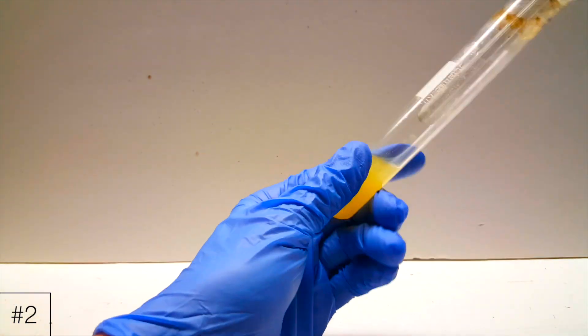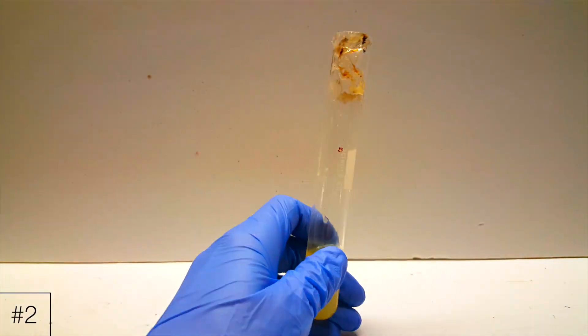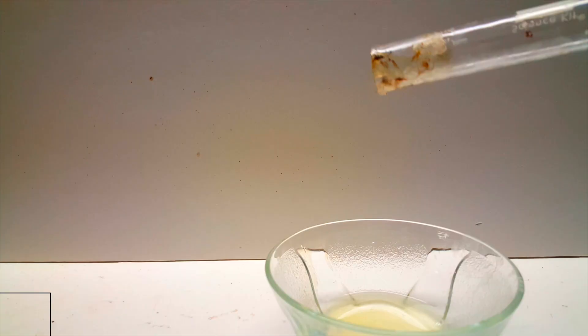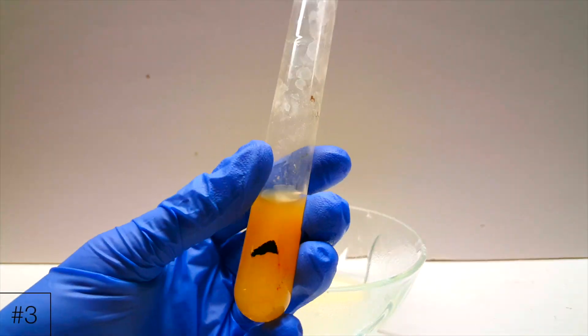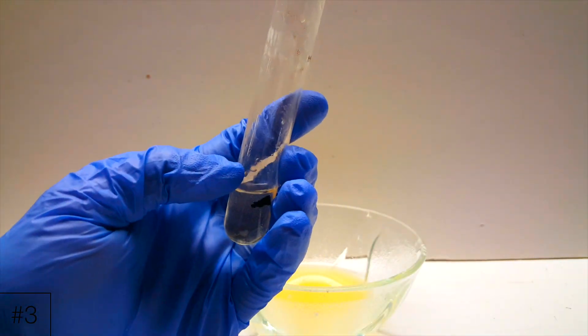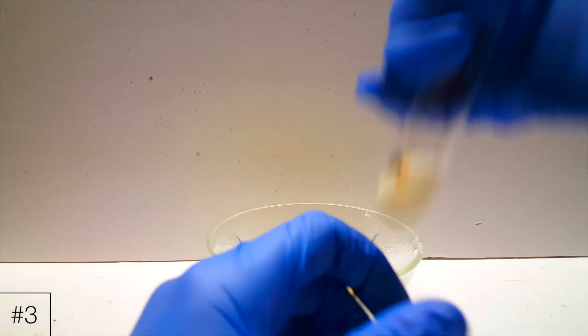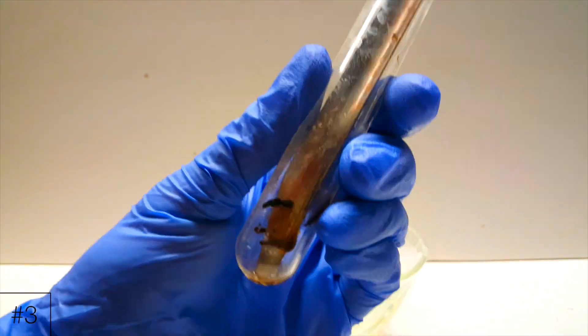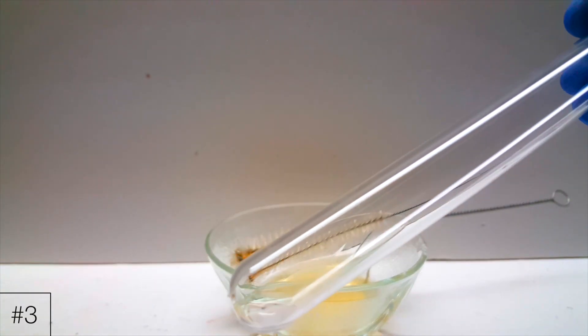Tube number 2 was more or less a lost cause because of the hot glue at the top. Otherwise it was generally pretty clean. Tube number 3 was decently clean, besides for this one piece of carbon residue towards the bottom. I decided to go after this with a metal spatula and brush. And after several minutes of scraping and scrubbing, I finally had a perfectly clean test tube.